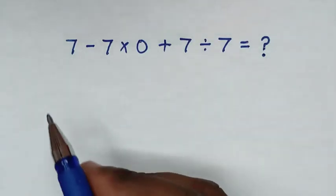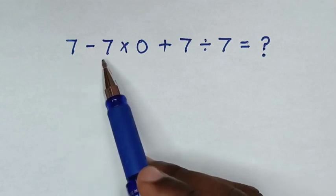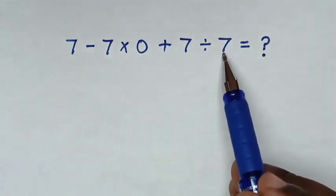Hello, you're welcome to solve this math problem: 7 - 7 × 0 + 7 ÷ 7.